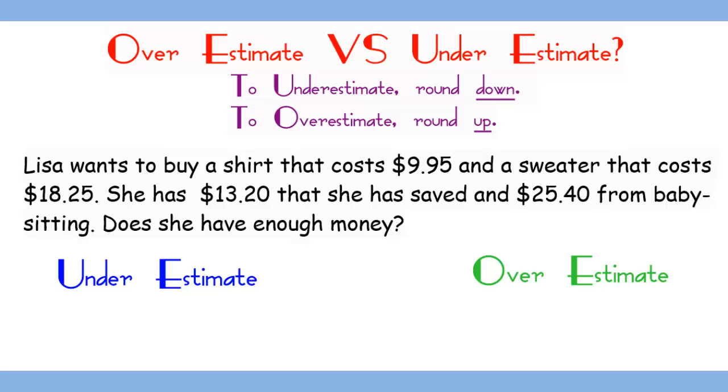In this slide, we will go over two concepts: underestimating, which is rounding down, and overestimating, which is rounding up. Lisa wants to buy a shirt that costs $9.95 and a sweater that costs $18.25. She has $13.20 saved and $25.40 from babysitting. Does she have enough money?